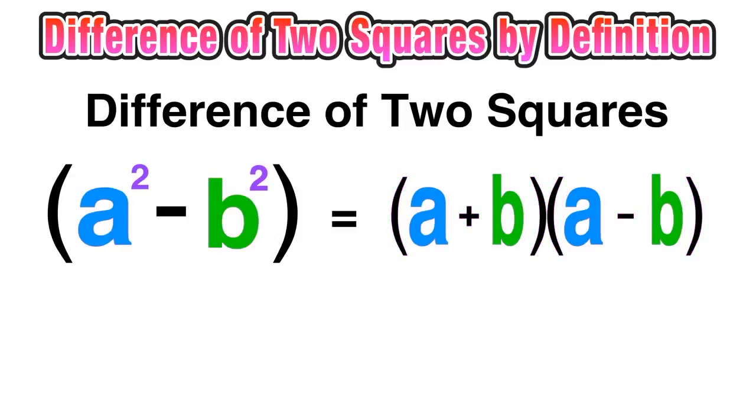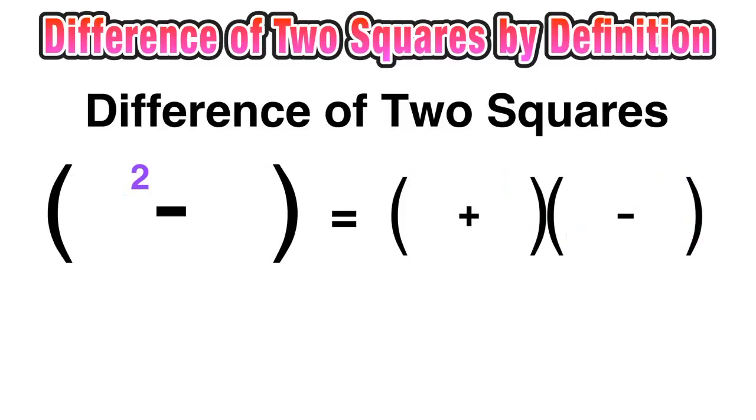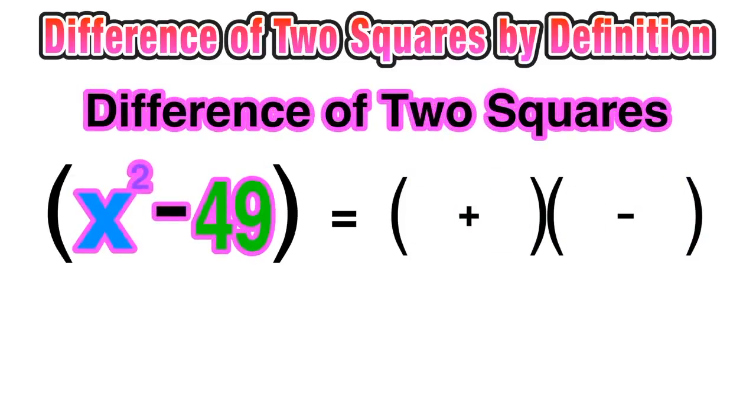Now for example, if we want to use this method to factor x squared minus 49, and again this is a difference of two squares since x squared and 49 are both perfect squares.